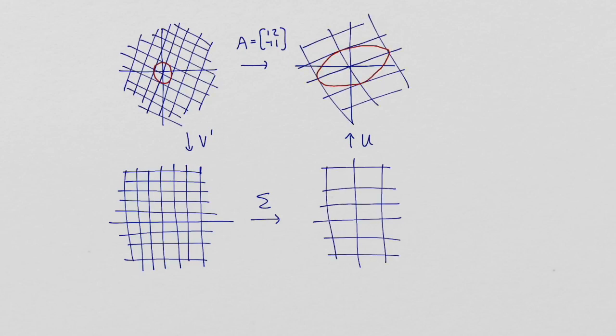Notice that the way that A stretches space is intrinsic in the entries of the matrix Σ. These entries are called singular values, and their product gives the volume scale factor of A, in other words, the factor by which A transforms volumes.